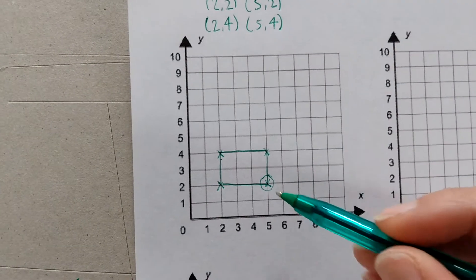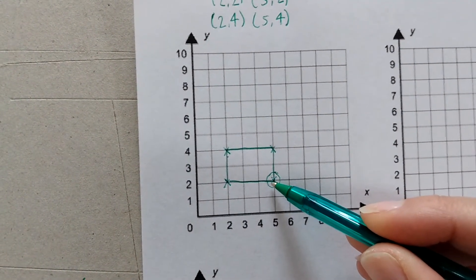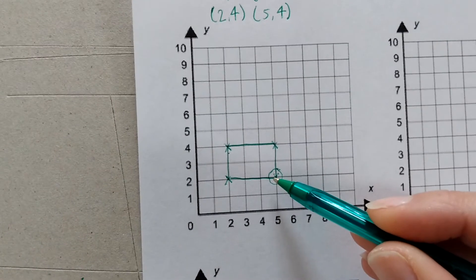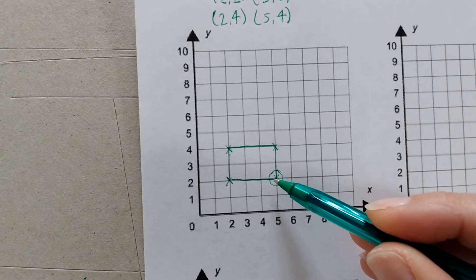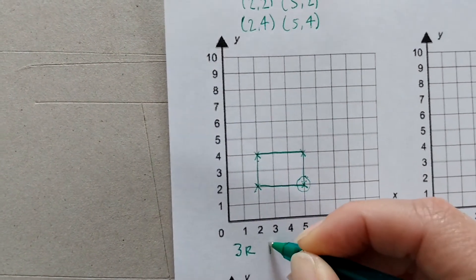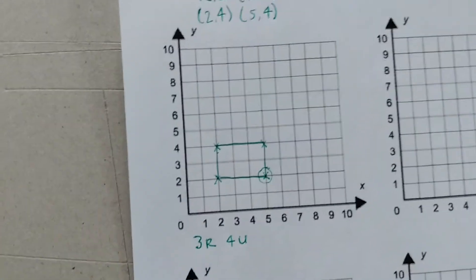Now what do I mean by that? Starting with this guy, I want him to move 3 right. I can't remember what I said now, did I say 4 up? I'm going to write it down, 3 right, 4 up. I'm really sorry if I said something different earlier on, I didn't write it down. 3 right, 4 up.